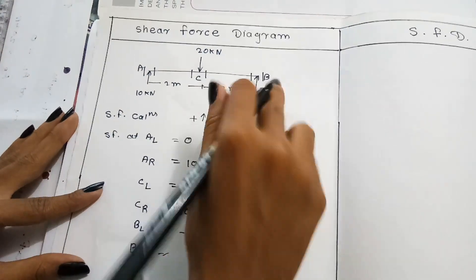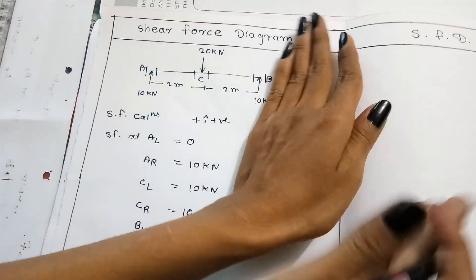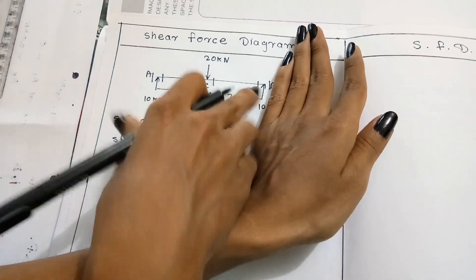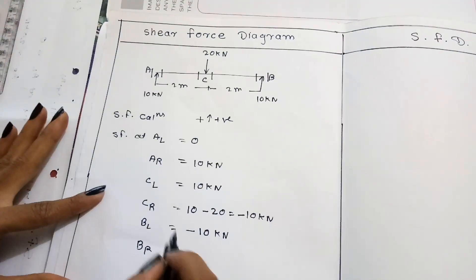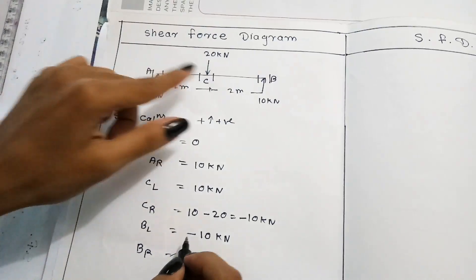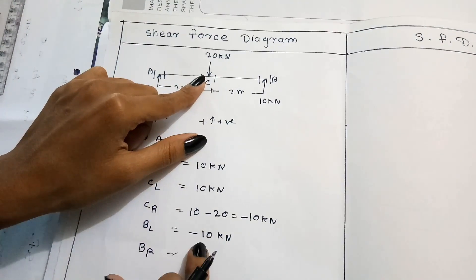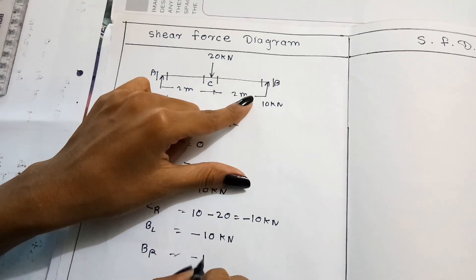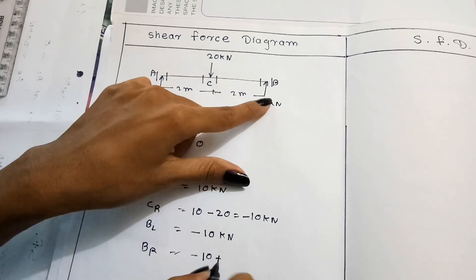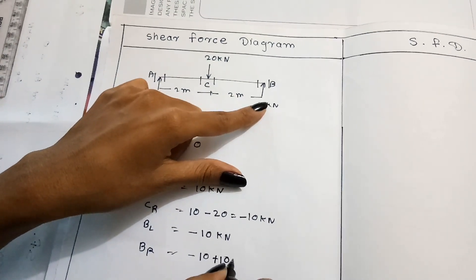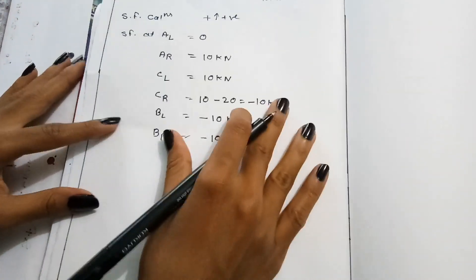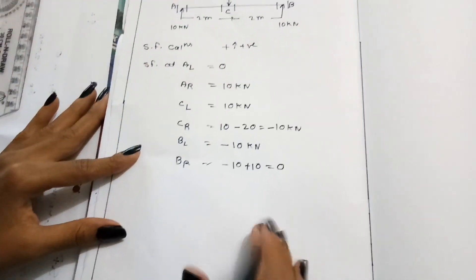At B-right, on the right side there is one force going upward. The calculation is: 10 minus 20 minus 10 plus 10, which gives minus 10 plus 10 equals 0. So B-right equals 0. Now, how to draw it.